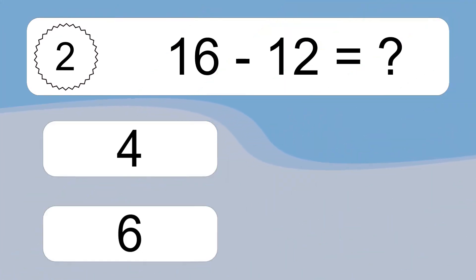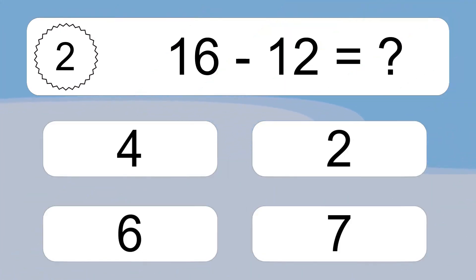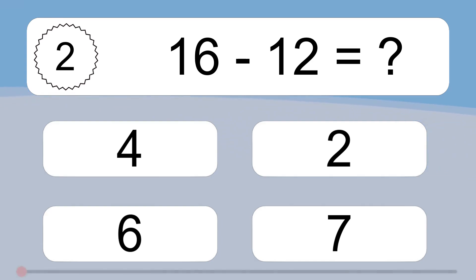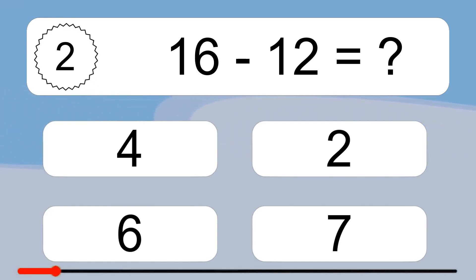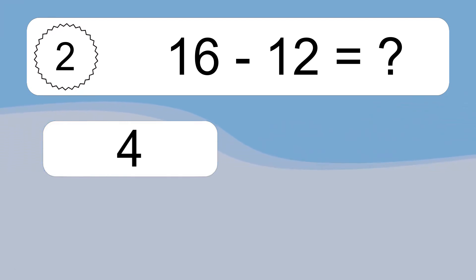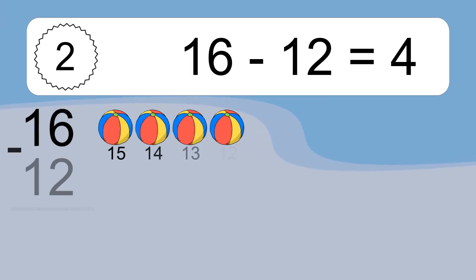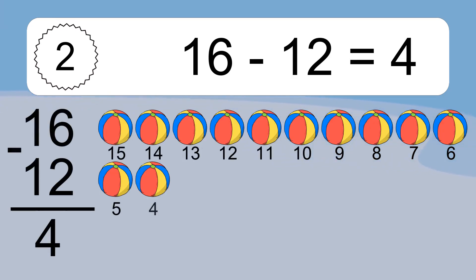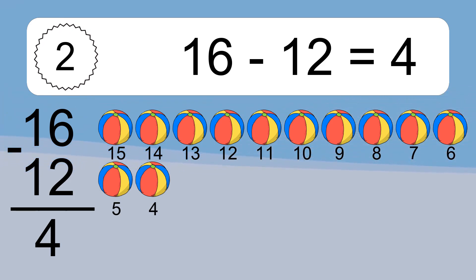16 minus 12 equals what? 16 minus 12 equals 4. Let's count it: 15, 14, 13, 12, 11, 10, 9, 8, 7, 6, 5, 4.